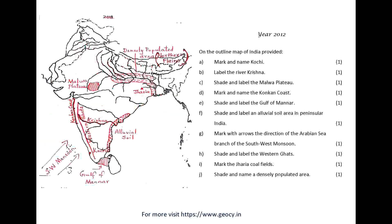Year 2012. On the outline map of India provided: K. Mark and name Kochi. L. Label the River Krishna. M. Shade and label the Malwa Plateau. N. Mark and name the Konkan Coast. O. Shade and label the Gulf of Mannar. P. Shade and label an alluvial soil area in peninsular India. Q. Mark with arrows the direction of the Arabian Sea branch of the southwest monsoon. R. Shade and label the Western Ghats. S. Mark the Jharia Coal Fields. T. Shade and name a densely populated area.